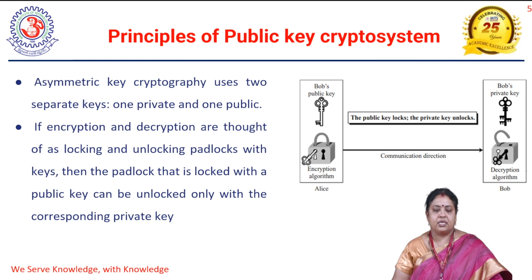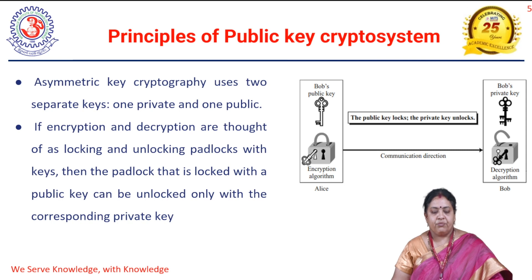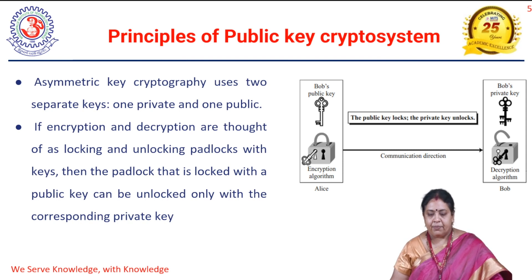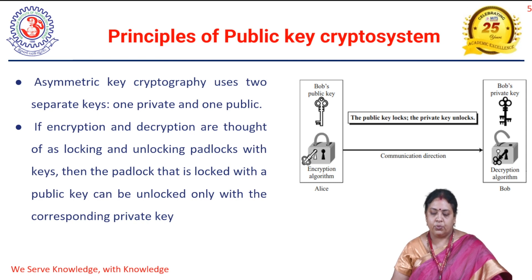Asymmetric key cryptography uses a pair of keys — two separate keys are used. One we call it as a private key and one we call it as a public key. It is a convention to call the sender as Alice and the receiver as Bob. Alice wants to send the message to Bob, so by using asymmetric key cryptography, Alice is going to encrypt the message by using Bob's public key — that is, the receiver's public key.